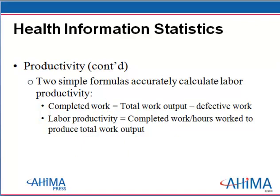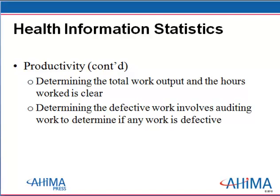Your textbook chapter 9 covers two simple formulas to accurately calculate labor productivity. First, completed work equals total work output minus defective work. Second, labor productivity equals completed work divided by hours worked to produce that output. Determining total work output and hours worked is straightforward, but determining defective work involves auditing the work to determine whether it is defective or not.